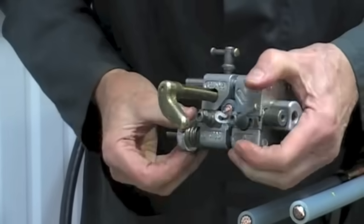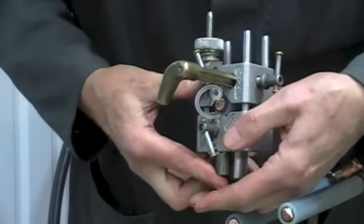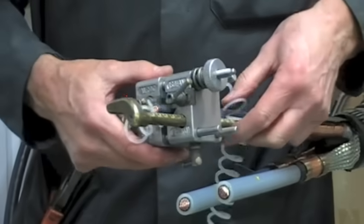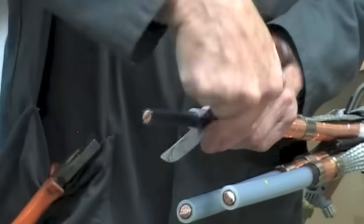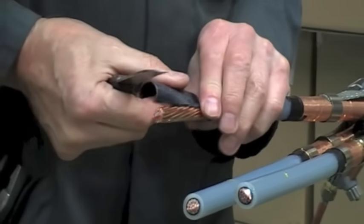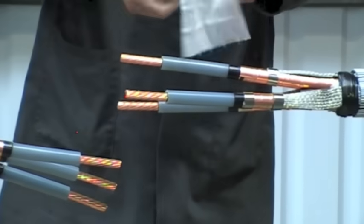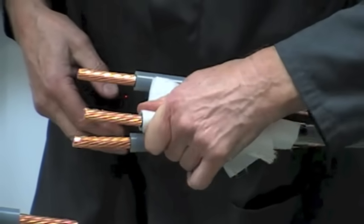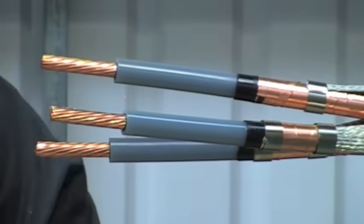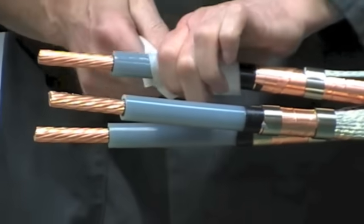This is a primary insulation removal tool that makes the process of removing the insulation quick and easy. Now score the semi-conductive layer over the conductor and remove. It's really important to clean the primary insulation layer. Use the tissues provided or a suitable solvent. All carbon traces must be removed from the primary insulation.